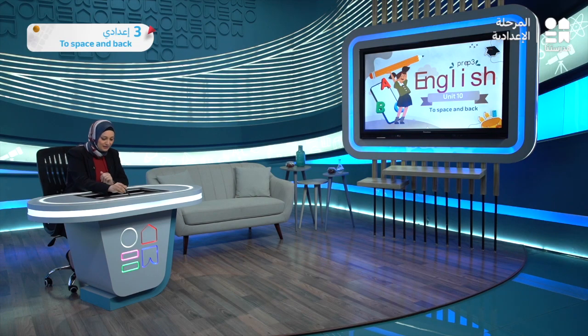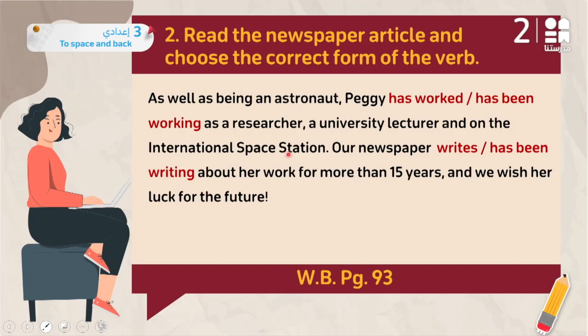'As well as being an astronaut, Peggy has worked / has been working as a researcher, a university lecturer, and on international space stations.' She worked as a researcher and lecturer — these are completed actions. Translating it confirms the action ended, so I use the present perfect: 'has worked.'